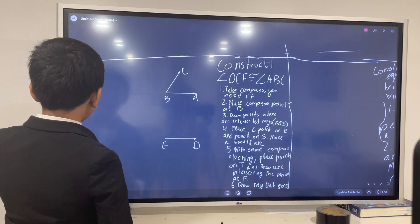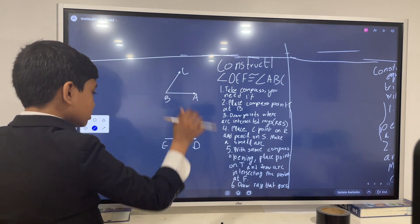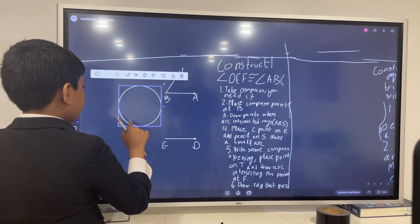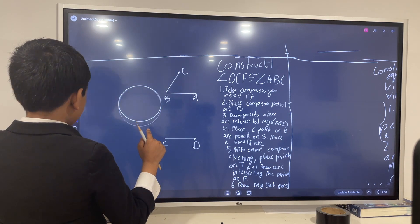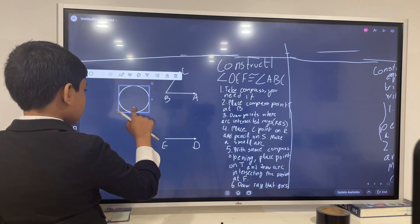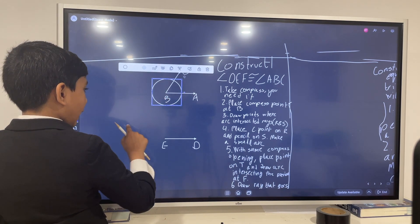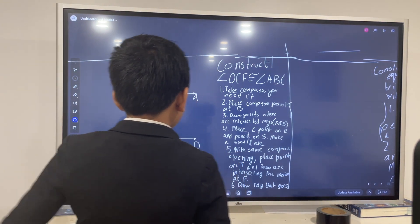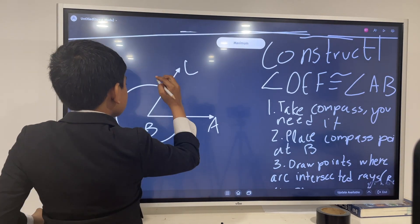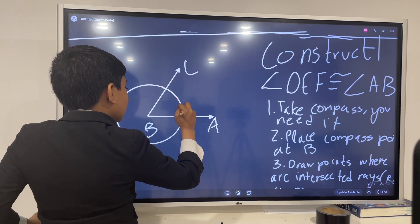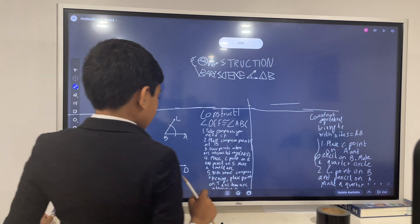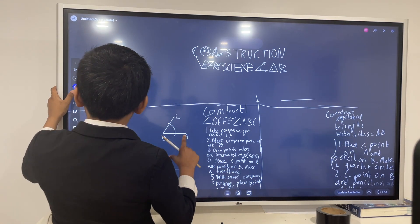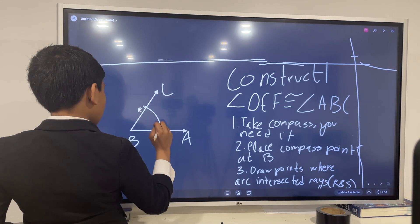So place compass points at B. You should draw these two first. And now, place your compass point on B. For us, we'll be taking a circle, maybe sliding it down a little bit. And we'll put the center at B.